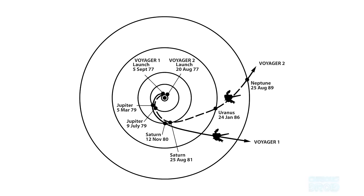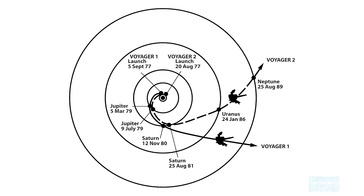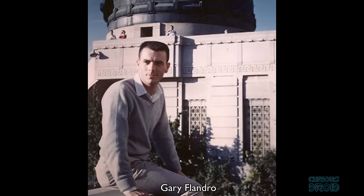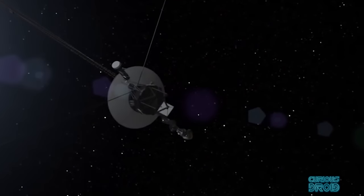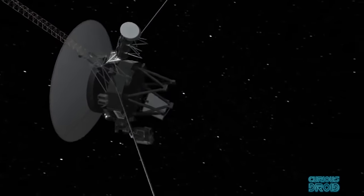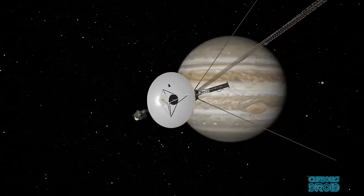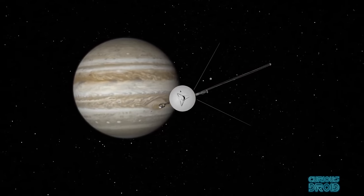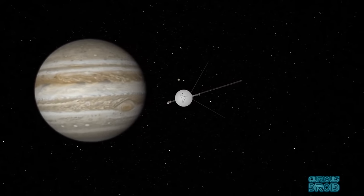They used planetary ephemeris to find a once in a 175-year alignment of the planets Jupiter, Saturn, Uranus, and Neptune. This was discovered by Gary Flandro in 1964 while working at JPL and allowed the planners to come up with the Grand Tour. This would allow one spacecraft to visit all four planets by using gravity assist and cut the mission time from 40 years to less than 10 if they launched in 1977.